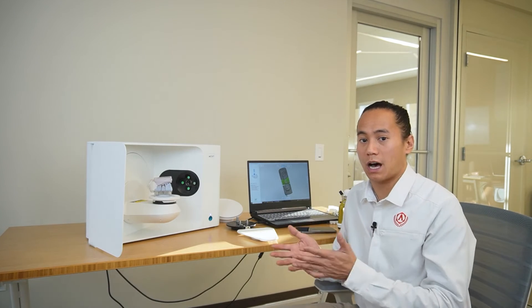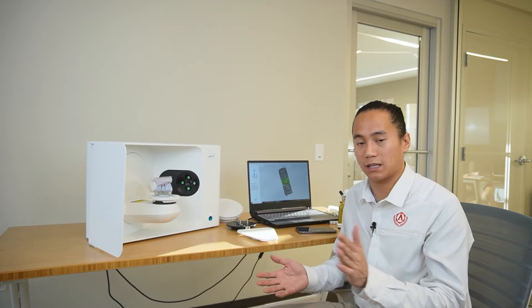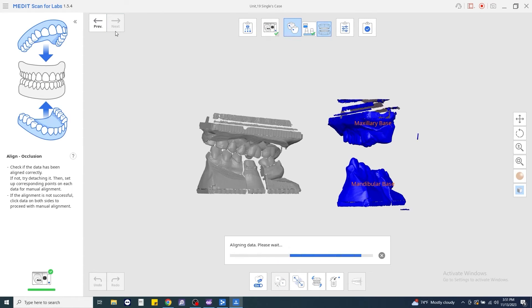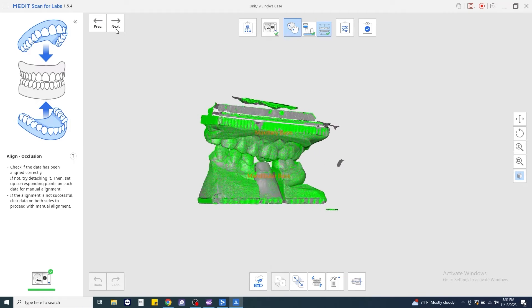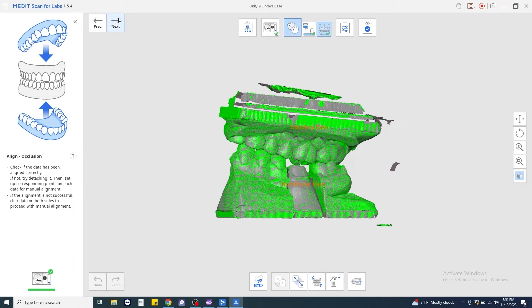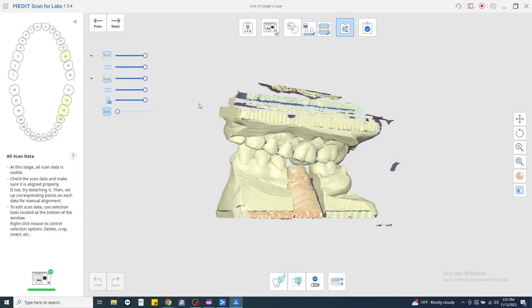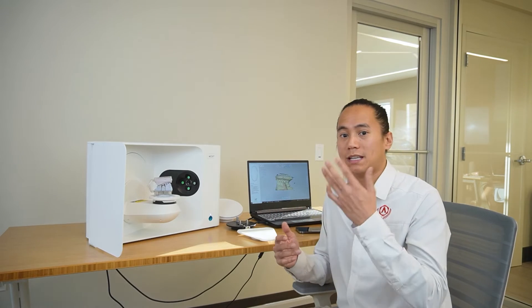The final step in the process is the software will align all of the individual scans together. So you just confirm after each alignment. And what we're going to look for is a nice gradient between your scans. And from there, now that all of your scans have been generated, we're just going to crop them. And then you can send those STL files or PLY files off to the lab to get designed, or send them right into ExoCAD to design them yourselves.